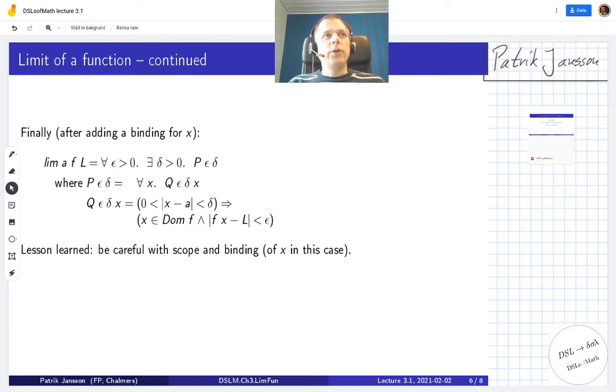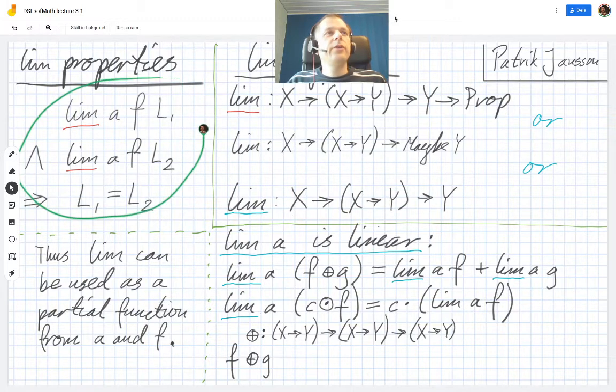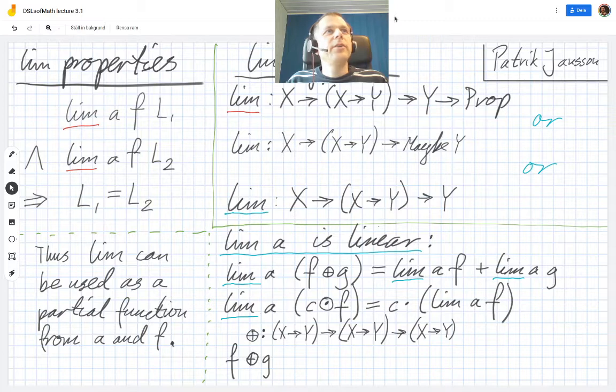So now we will move on and use LIM for different things, and as a first step we will look at a little bit of the properties that this LIM operation satisfies. We start up on the left side of this figure where it has a logical statement. It says that the limit of the function f at a, if that's L1, and also the limit of f at a is L2, then L1 has to be equal to L2. This can be proven from the definition on the previous slides. We will not prove it here, but it's a good exercise.